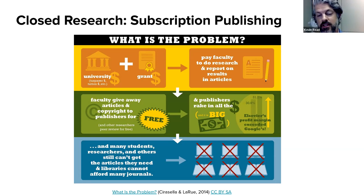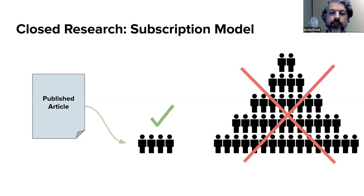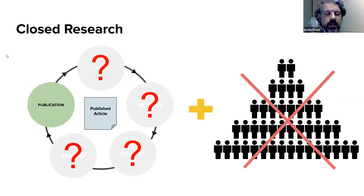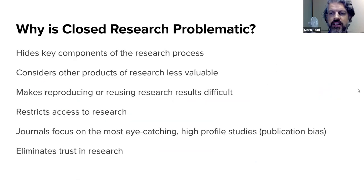The subscription model gives access only to those who can afford to pay — even though the research might have been funded by a public university or taxpayer money. Not only can people not access the methods, ideas, or data underlying a publication, but access is restricted to a very small subset of people — a double whammy in terms of research being closed and inaccessible.